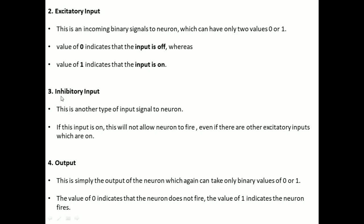The third type of component is Inhibitory Input. This type of input is another type of input signal to the neuron. If this inhibitory input is on, then it will not allow the neuron to fire, even though the excitatory inputs of that neuron are on. That is, if excitatory inputs are on but the inhibitory input is also on, then the neuron will not be allowed to fire.